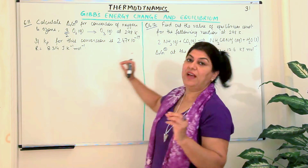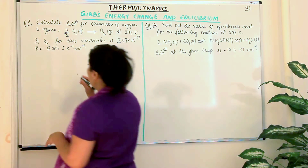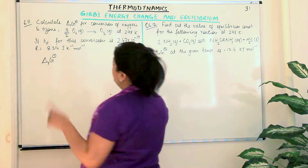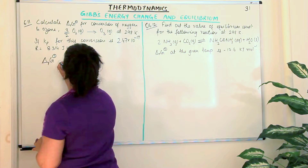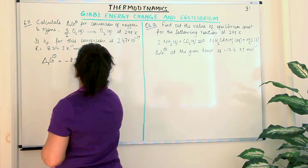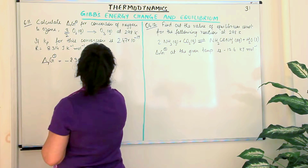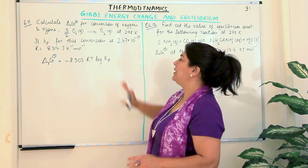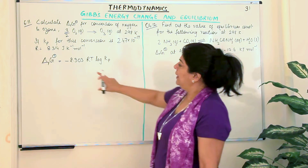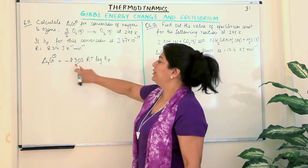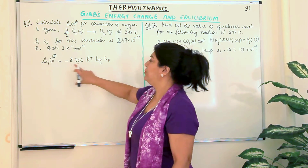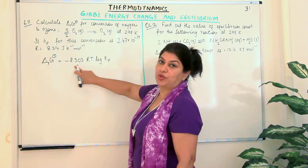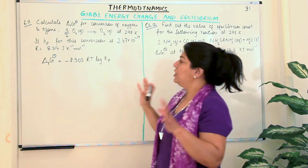Our question is to calculate delta G. The equation we use is: delta RG° = −2.303 RT log K. Here K can be Kp or Kc; since we've been given Kp, we write Kp. If it were natural log, the 2.303 factor would not be there — delta RG° = −RT ln Kp — but since we want log base 10, we multiply by 2.303. This is the equation we apply.